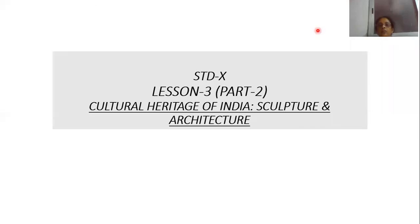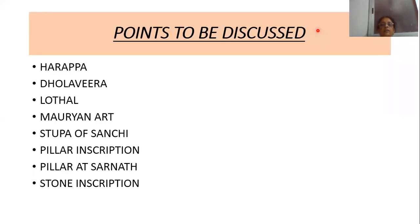Good morning students. Today I am going to explain the second part of lesson number three: Cultural Heritage of India — sculpture and architecture. Today I will cover the following points: Harappan civilization, the cities of Dolavira and Lothal, Maurya Nata, Stupa and Sanchi, Pillar Inscription, Pillar at Sarnath, and Stone Inscription.